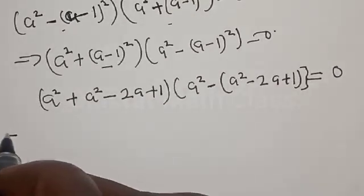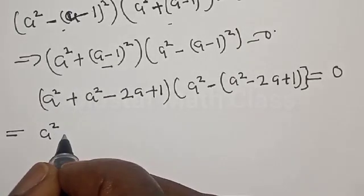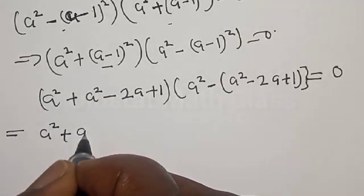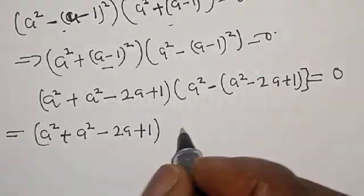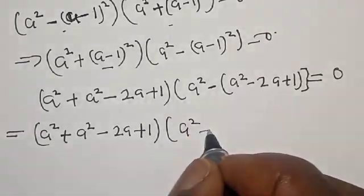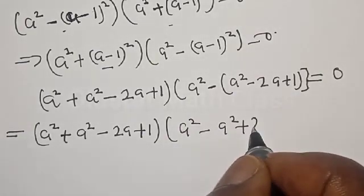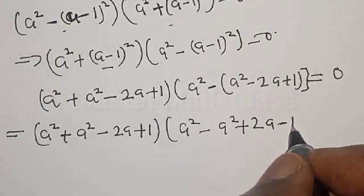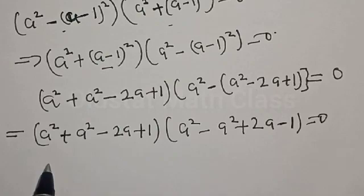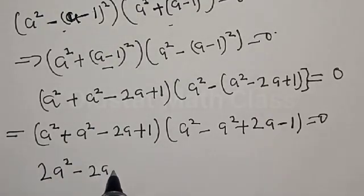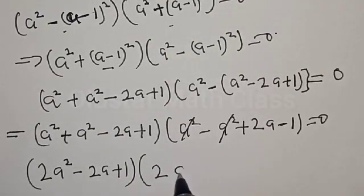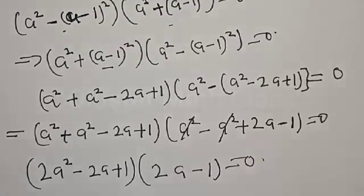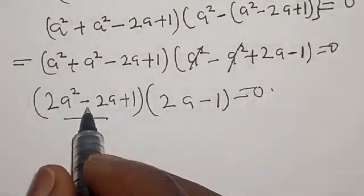Our equation now becomes (a² + a² - 2a + 1) multiplied by (a² - a² + 2a - 1) equal to zero. Simplifying: a² + a² gives 2a², so the first factor is 2a² - 2a + 1. In the second factor, a² - a² cancels, leaving 2a - 1 equal to zero.